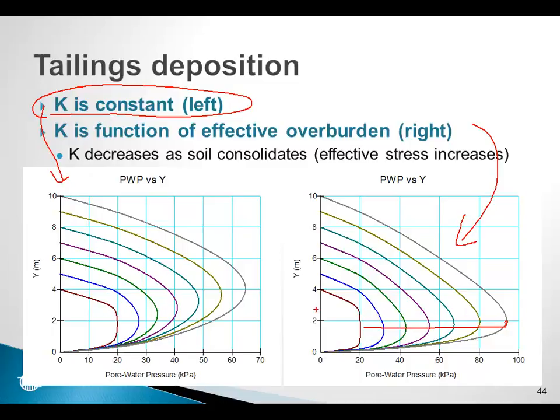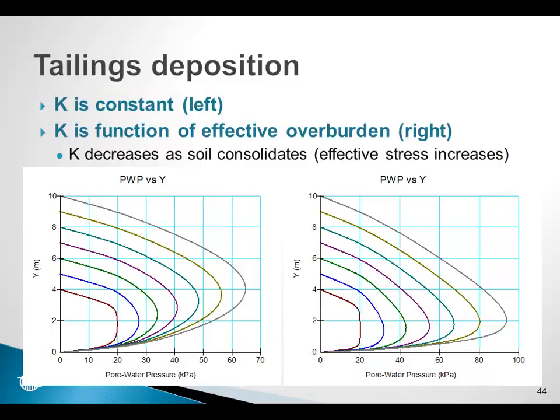Therefore, there is less dissipation of the excess pore water pressure. When dealing with soft sediments like tailings, if we are interested in real-time consolidation, we need to be able to modify the hydraulic conductivity as a function of the effective overburden stress, and we can do this through a modifier function.